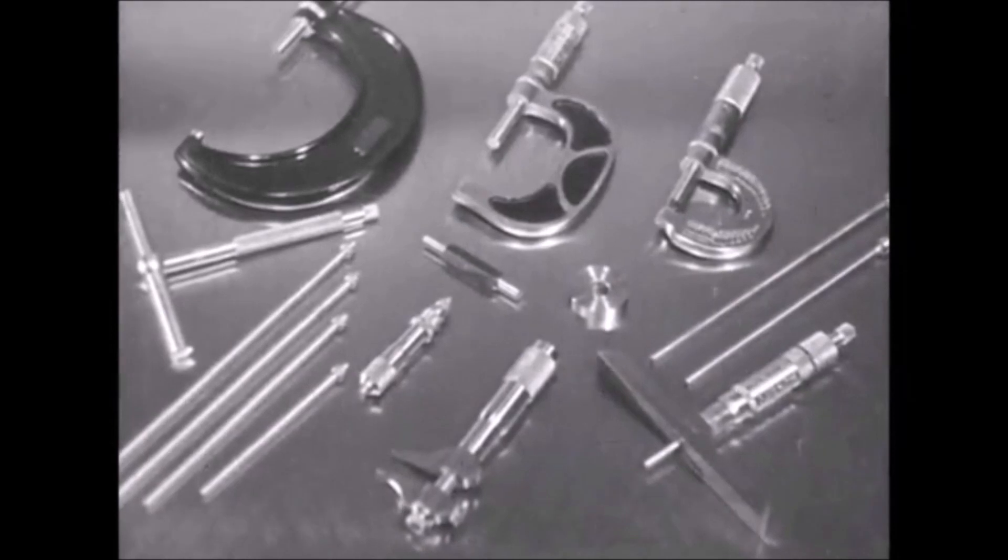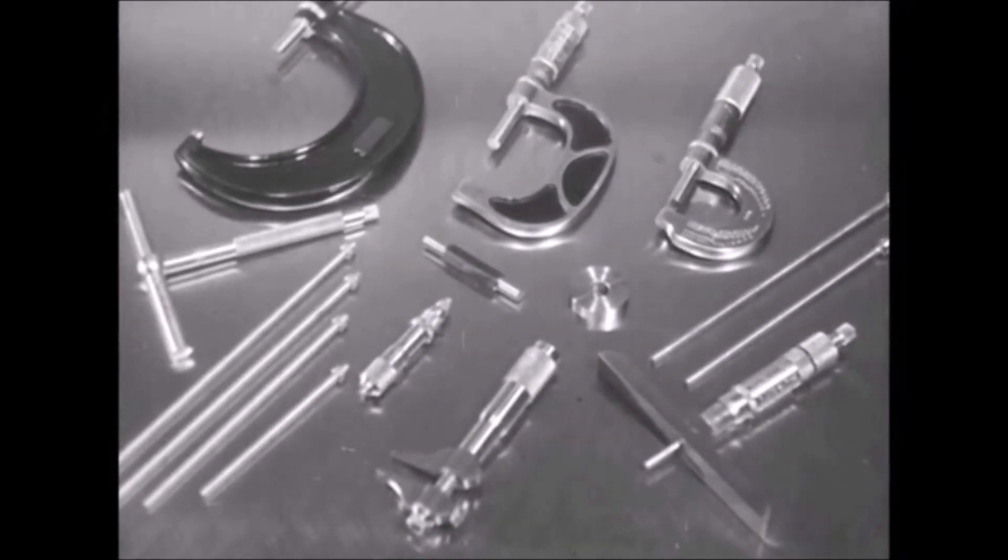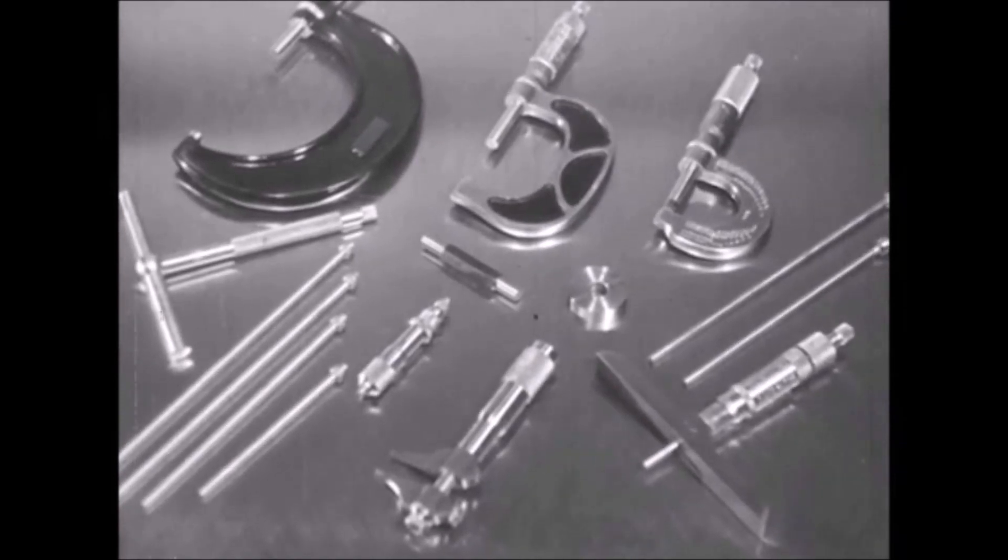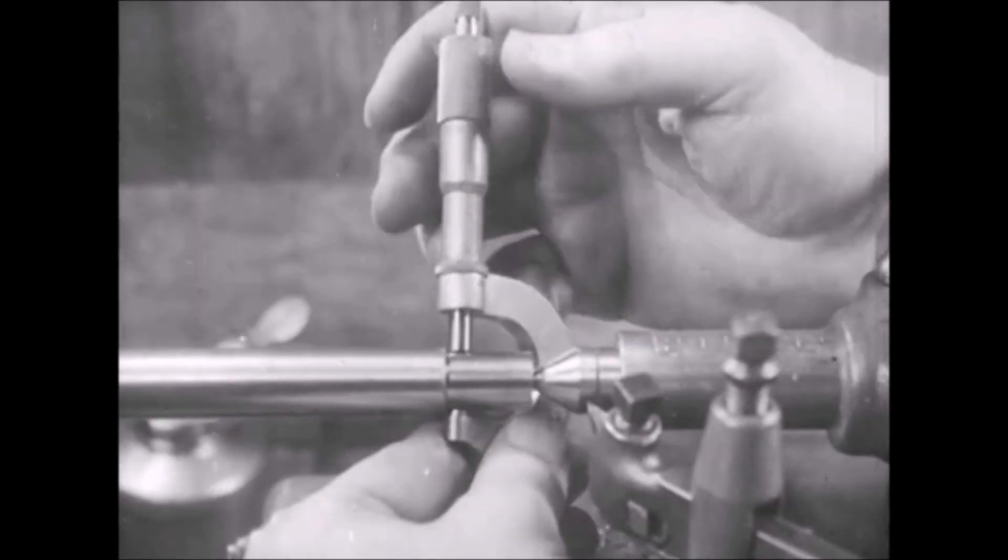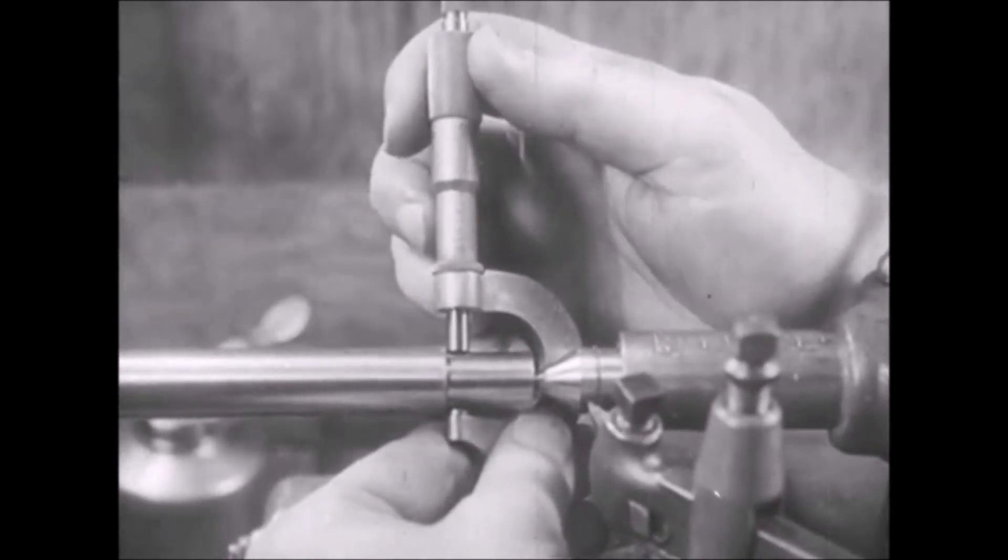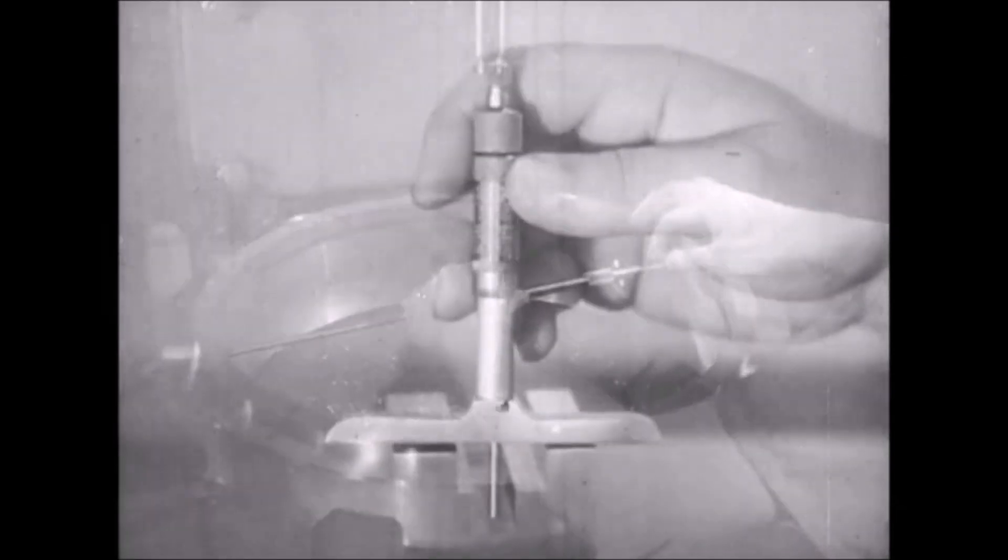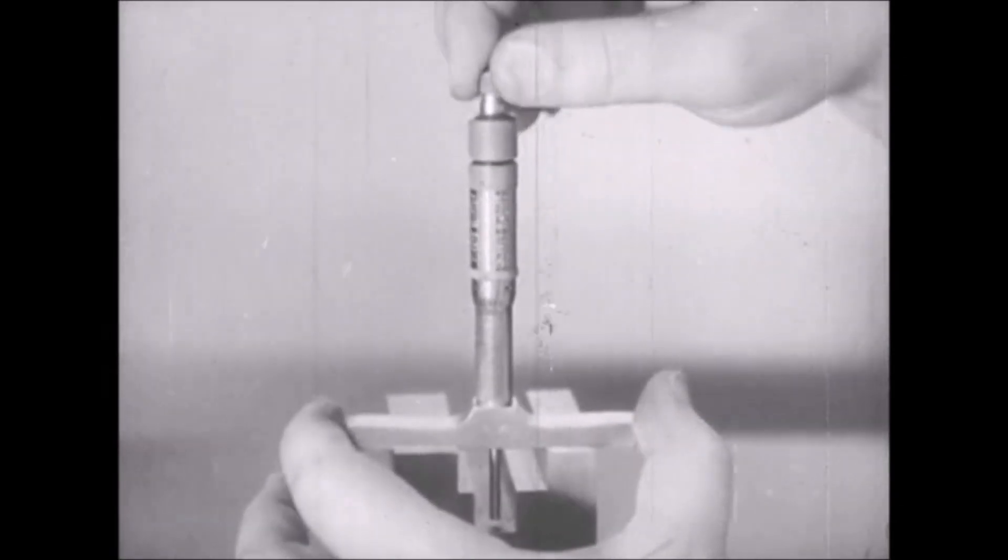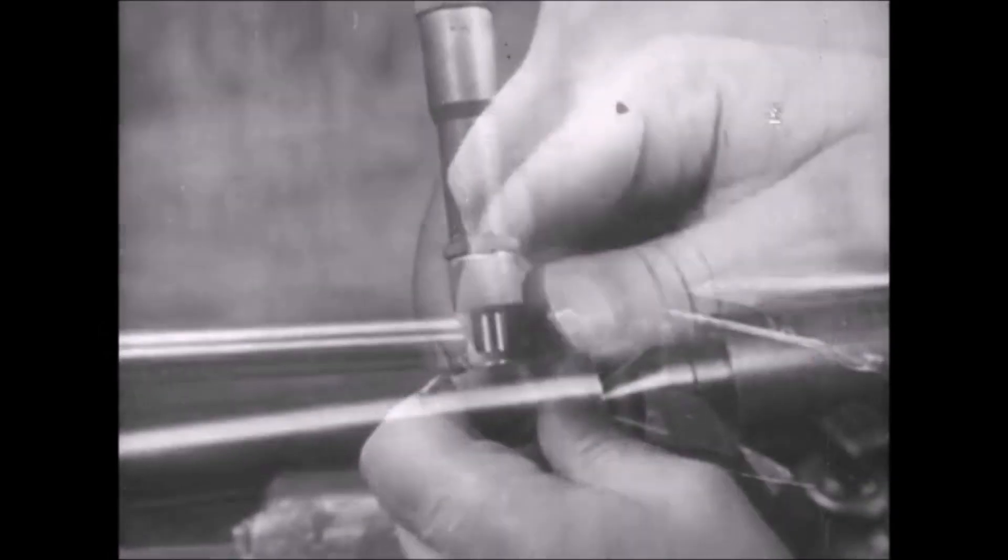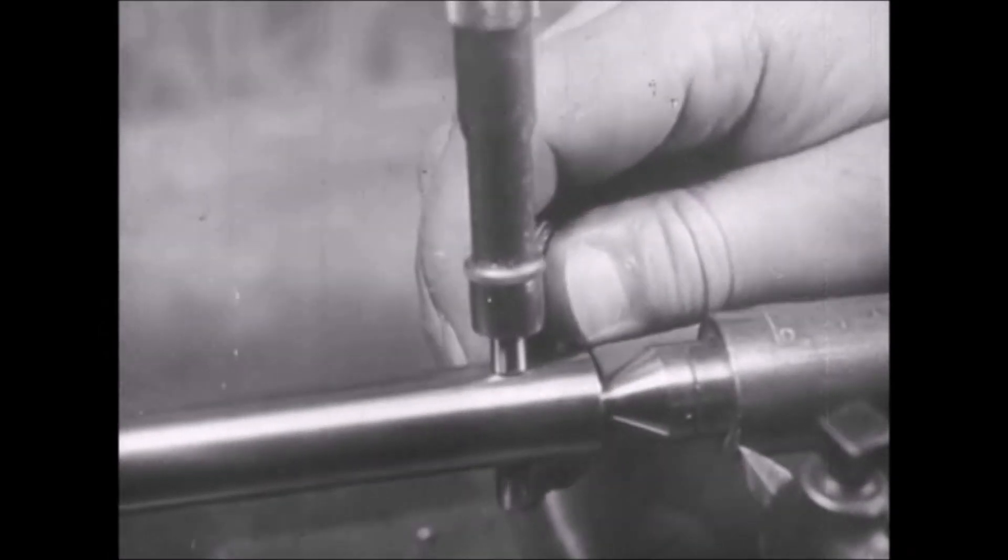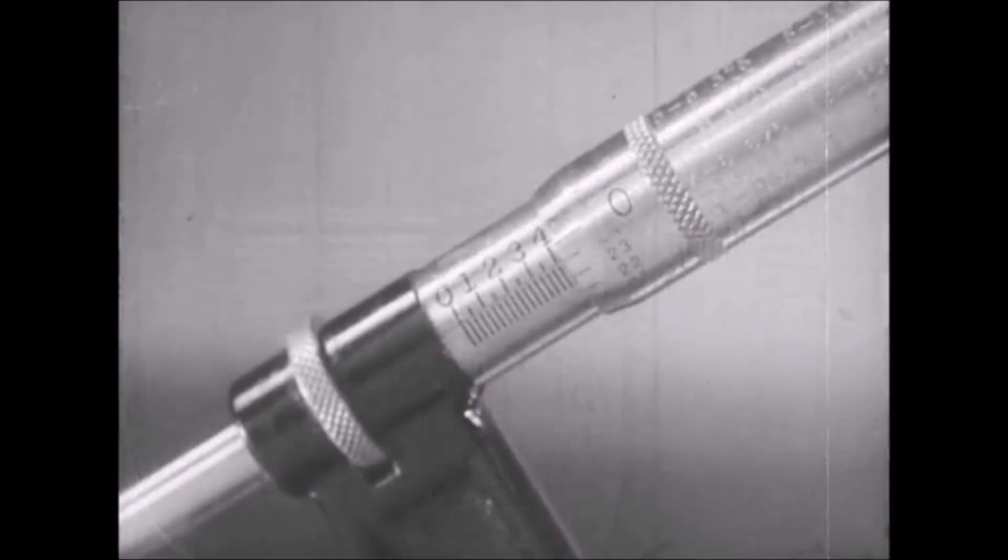Micrometers and micrometer measuring tools are used in every machine shop. If the micrometer principle is understood, these instruments are easy to read. If the right type of micrometer is selected, accurate measurements can be taken for outside measurements, and for inside measurements, and for depth measurements as well. If they are kept clean and used properly, on work clean and free from burrs, they will give the precise measurements that make modern mass production possible.